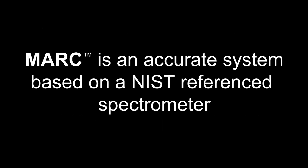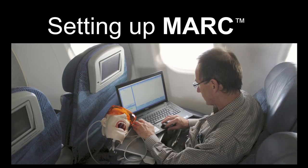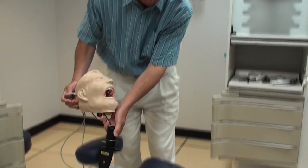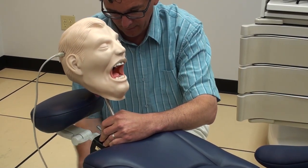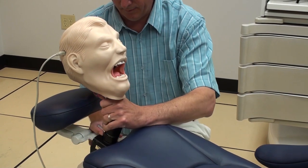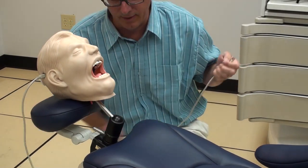Mark is an accurate system based on a National Institute of Standards Technology referenced spectrometer. Here we can see the sensors in Mark. The sensors are roughly the same size as a Class I preparation in a bicuspid tooth. The Mark head is easy to set up and the software is very user friendly. Mark can be used almost anywhere — here we can see it being attached to a dental chair or a laboratory bench. The USB cable is then plugged into the computer which runs the proprietary Mark software.